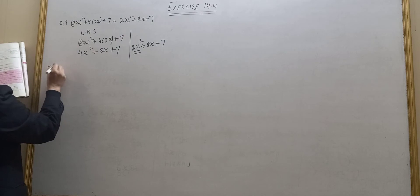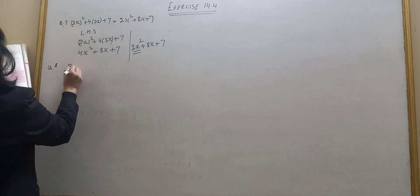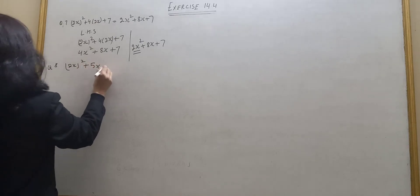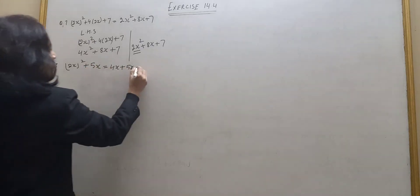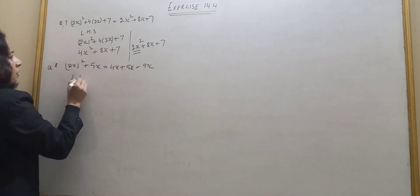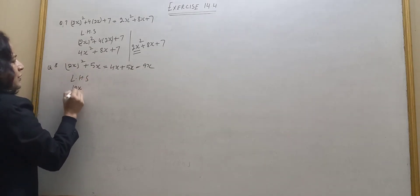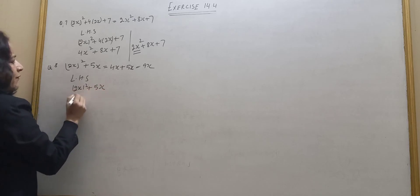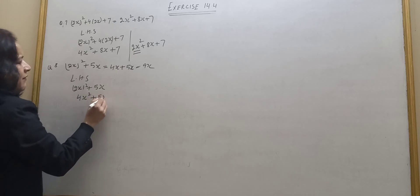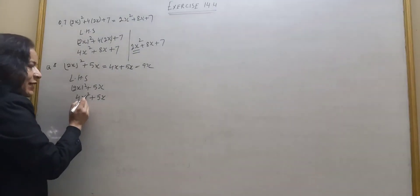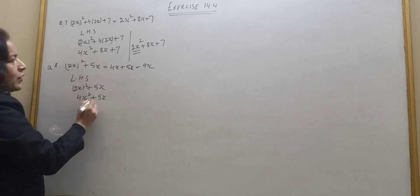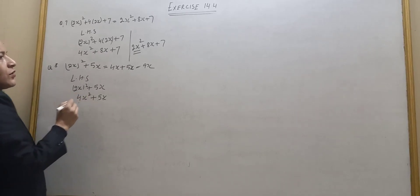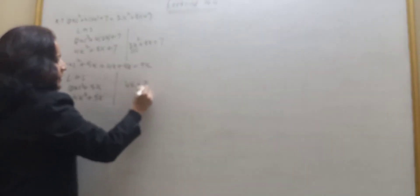Question number 8: Let's find — is 2x² plus 4 into 2x² plus 5x equal to 9x? We cannot add 2x² and 5x because it is x² and it is x — unlike terms. So 2x² plus 5x should equal 4x² plus 5x. Where is the error? It should be 4x².